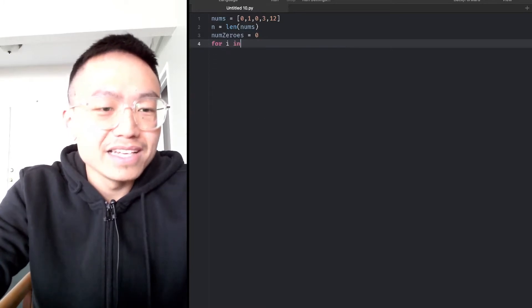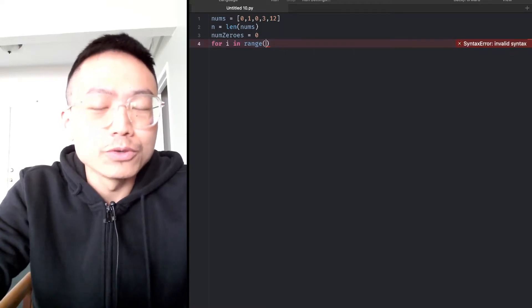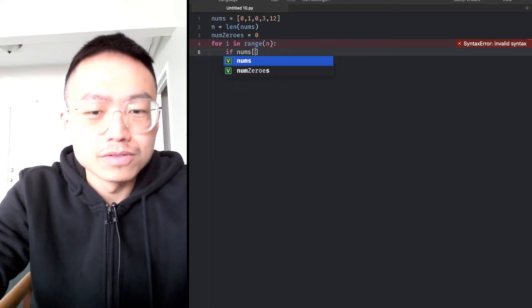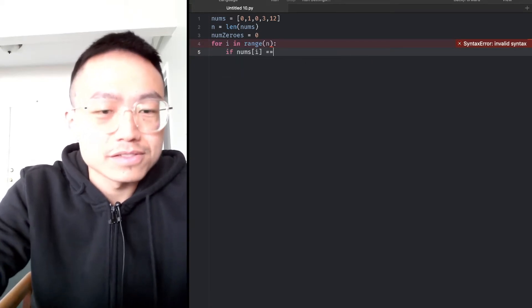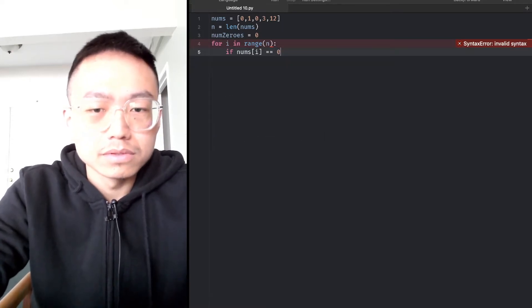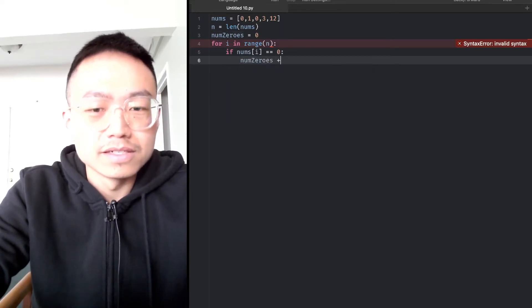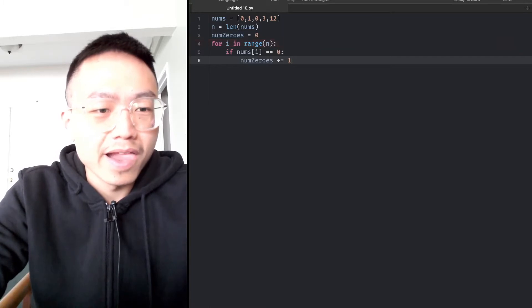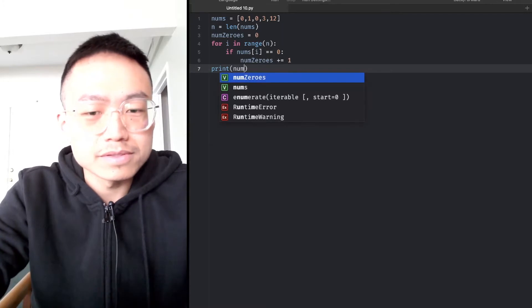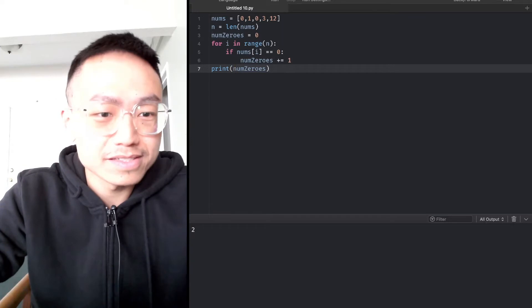For i in range, we need to set a for loop to count zeros. If we meet a zero, we just increment numZeros by one. We can make a test by printing numZeros. Yeah, it's two because we have two zeros here.